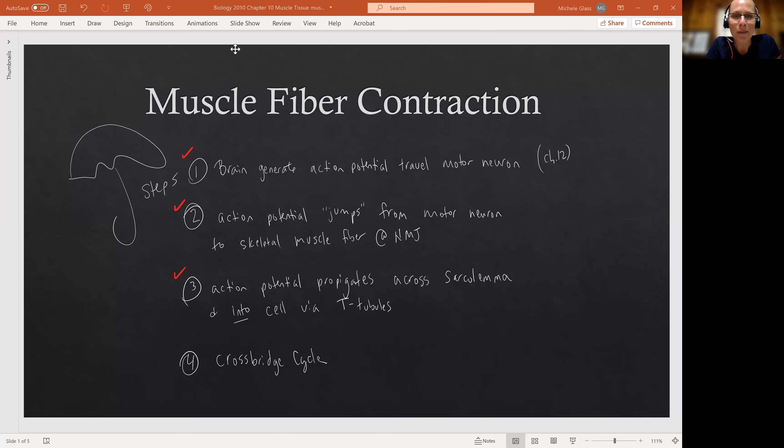The brain, the central nervous system, is going to generate the action potential. It's going to travel down that motor neuron. And then our big step two is that signal reaching the synaptic knob. And then we kind of said the signal will jump over or cross that synaptic cleft to the muscle fiber.